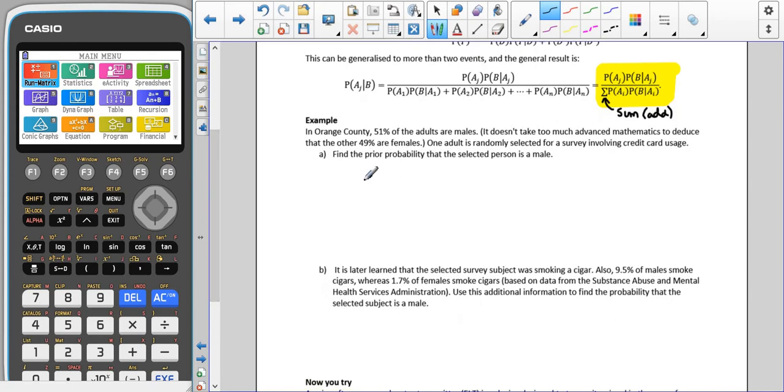So for the example, we've got in Orange County, 51% of adult males. It doesn't take too much advanced math to deduce that there's 49% females. This is living in a very black and white world, not like the real world, where we only have two genders. So here we have our gender, where we're saying that there's only male and females. And as I said, not relating to real life, usually it would now have to specify. So we have 51% males and 49% females.